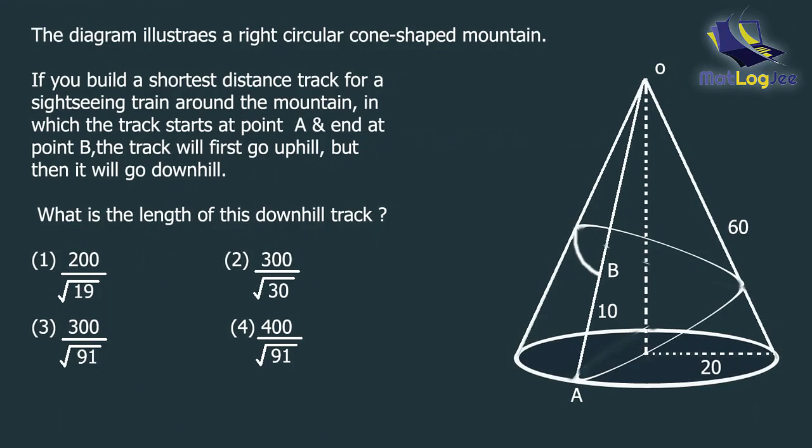In this diagram you can see a right circular cone-shaped mountain. The question is if you build a shortest distance track for a sightseeing train around the mountain, in which the track starts at point A and ends at point B, the track will first go uphill but then it will go downhill. What is the length of this downhill track?